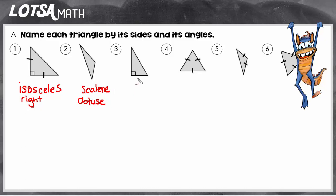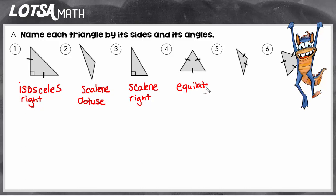On number three I see no tick marks showing that the sides are the same, so all three sides must be different — this is a scalene triangle. It also has a right angle, so it's a right triangle. On number four, judging by its sides, I see that all three sides are the same, so that's an equilateral triangle. Looking at the angles: that's acute, that's acute, and that's acute — since they're all acute, it's an acute triangle.